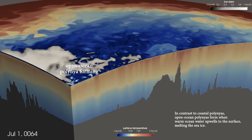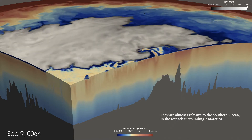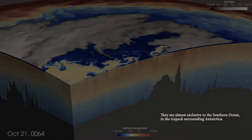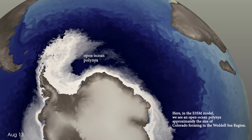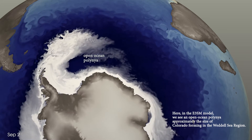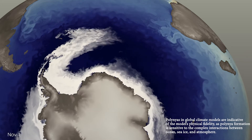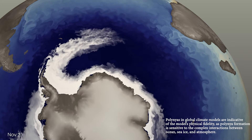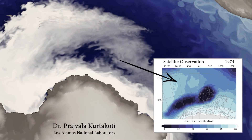In contrast to coastal polinias, open-ocean polinias form when warm ocean water upwells to the surface, melting the sea ice. They are almost exclusive to the southern ocean and the ice packs surrounding Antarctica. Here in the E3SM model, we see an open-ocean polinia approximately the size of Colorado forming in the Weddell Sea region. Polinias in global climate models are indicative of the model's physical fidelity, as polinia formation is sensitive to the complex interactions between ocean, sea ice, and atmosphere. Since the 1980s, we haven't really had these large polinias, and it's important to understand why, and also if climate change has any role to play in why they've stopped occurring.